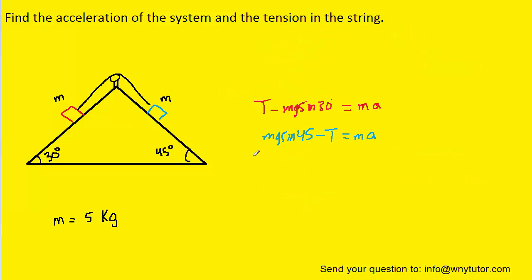So we've gone ahead and stacked the two equations on top of one another, and we're going to add the two equations together. If you look carefully, you can see that we have a positive tension T and then a negative tension T. When we add those together, they're going to cancel out. And then we'll have the positive mg sine of 45, and when we add it to this negative mg sine of 30, we're going to have minus mg sine of 30. And then we'll set that equal to the right-hand side, which will be ma plus ma, which is just going to be 2ma.